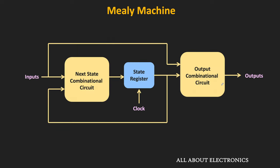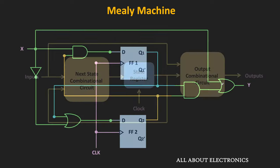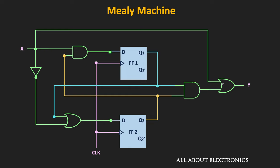On the other hand, in the Mealy machines the external inputs are also connected to the combinational logic at the output side. For example, this sequential circuit is an example of the Mealy machine. This circuit is similar to the earlier circuit, but here an OR gate is connected at the output side. As you can see, this input X is one of the inputs to the OR gate, while the second input is the output of the AND gate. In this circuit, the output Y depends on the present input X as well as the present states of the flip-flops. So depending on how the output is generated for the circuit, we have two FSM models: the Mealy machine and the Moore machine.